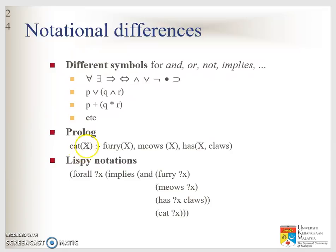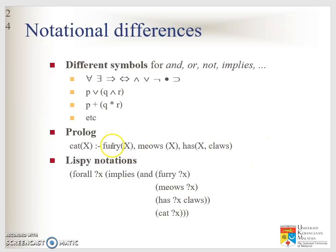In Prolog, x is a cat if x is furry and satisfies the relevant conditions. This is how we define 'cat' in Lisp notation.